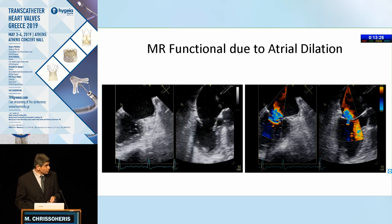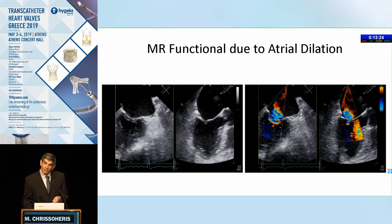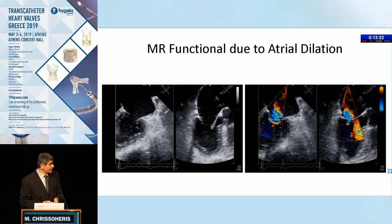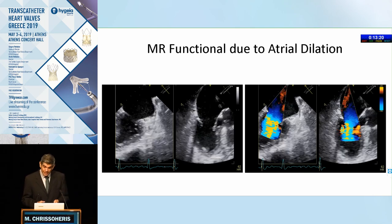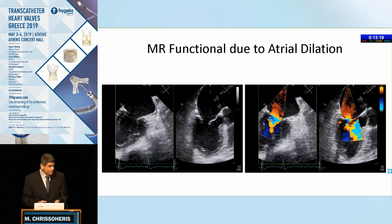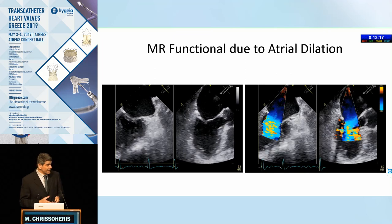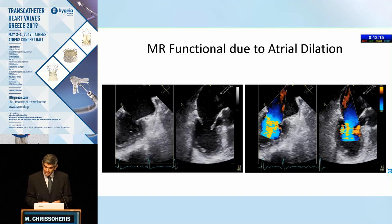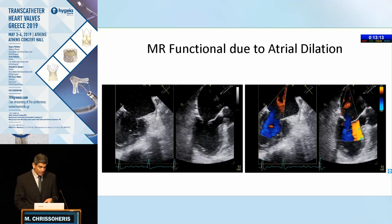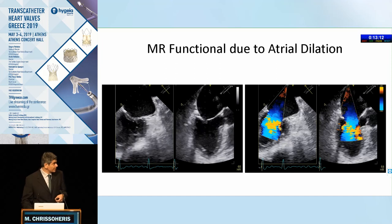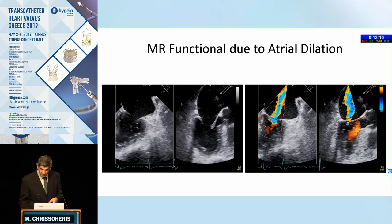There's also the entity of atrial functional MR, where the atrium dilates — particularly in patients with atrial fibrillation. These are commonly elderly patients, and this leads to annular dilatation and severe functional MR with a relatively preserved left ventricular ejection fraction.